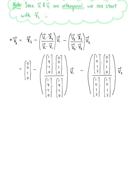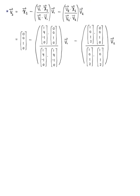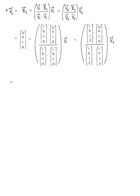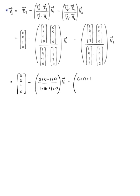Let's find v3. We have x3 = (0,0,1,0). The dot product in the first projection numerator is 0+0-1+0 = -1, divided by 1+16+1+0 = 18. The dot product in the second projection numerator is 0+0+1+0 = 1, divided by 1+0+1+4 = 6. So the projections have scalars -1/18 and 1/6.